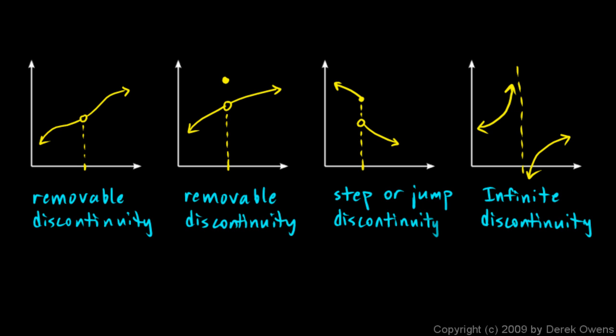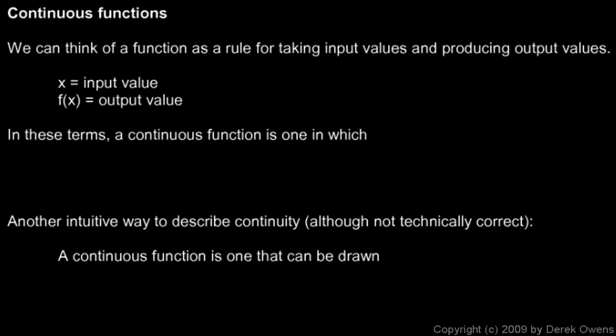So those are the different types of discontinuities — easy to remember names because they're meaningful and fairly descriptive. Now let's think about continuity. What does it mean for a function to be continuous? Think of a function as a rule for taking input values and producing output values: you have some function of x, you put in a number x as your input, and that expression tells you what calculation to do to get the output value f(x).